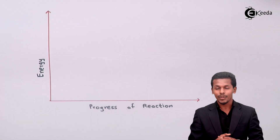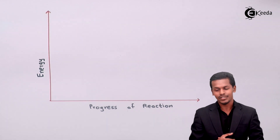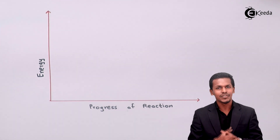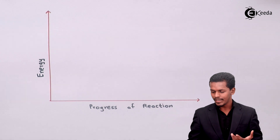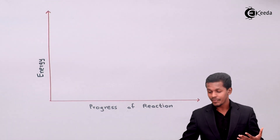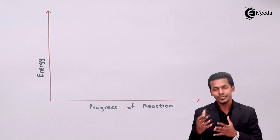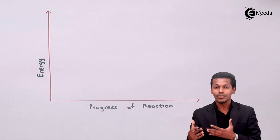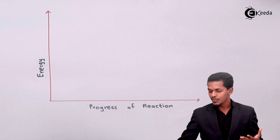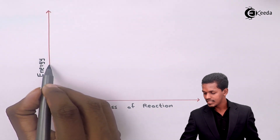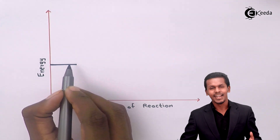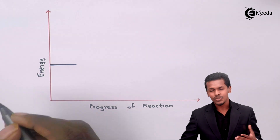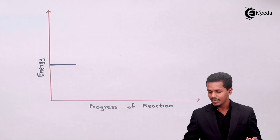This is the graphical representation of how the catalyst affects the rate of reaction and the activation energy. The graph represents the progress of reaction versus the energy required for the reactant to produce the product. The reactants A plus B have a particular energy level, and the products C plus D also have a particular energy level.